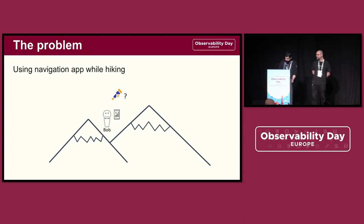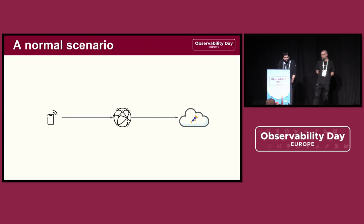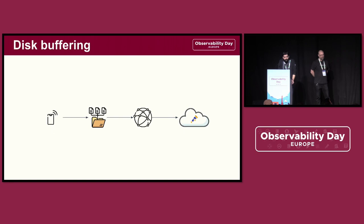This is actually one of the pretty common challenges that any mobile application has to deal with, which is why when we started working on OpenTelemetry for Android applications, this was one of the first things we had to take care of. In a normal use case scenario, a device sends telemetry data over the internet to an observability back-end service. What we've been working on is adding an extra layer where Android applications will store all of the telemetry data first into the device's internal storage.